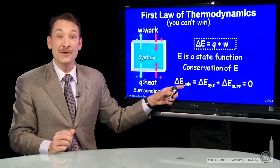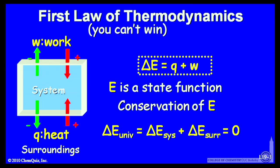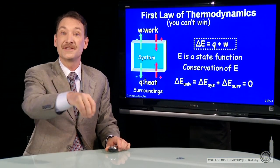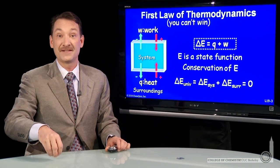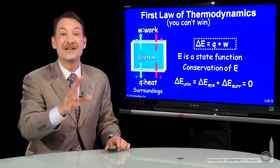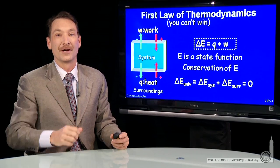So the energy of the universe, that is the total changes in the system and the surroundings, that always sums to zero. The amount of energy in the universe is constant. And all I can do is move it from one system to another, or from the system to the surroundings. And I do that with heat and work.